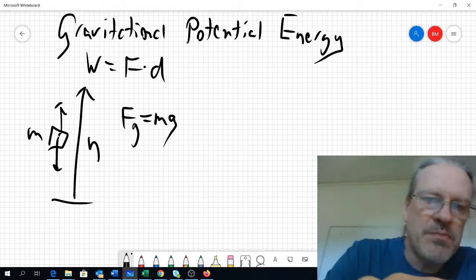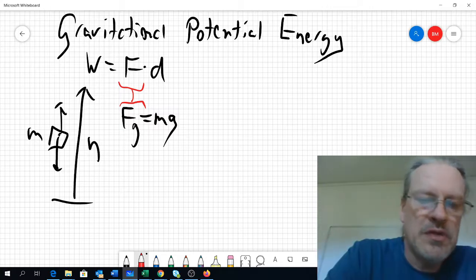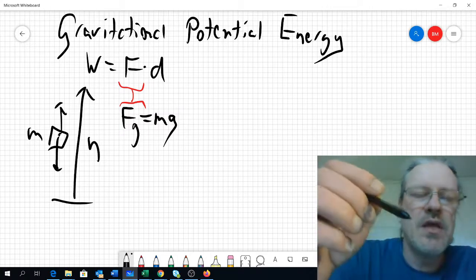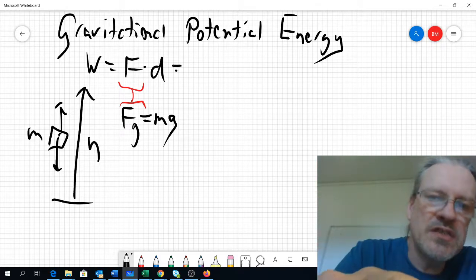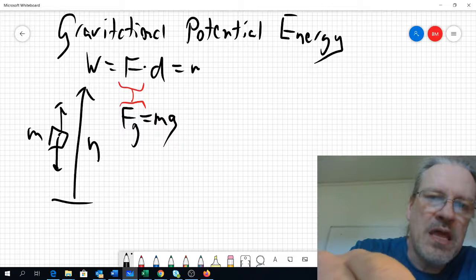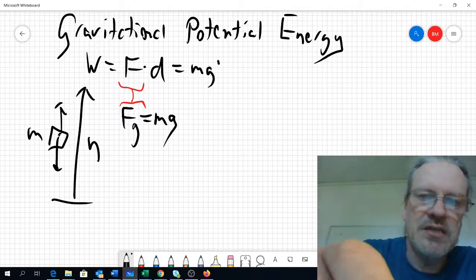So we could basically replace this to calculate what energy, what work we need to put in to lift this. So we will get the formula mg, and the distance we lift it is the height, so mgh.